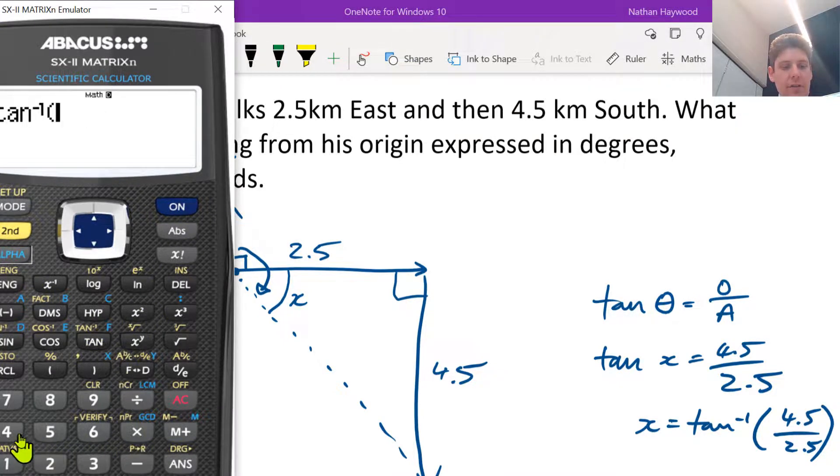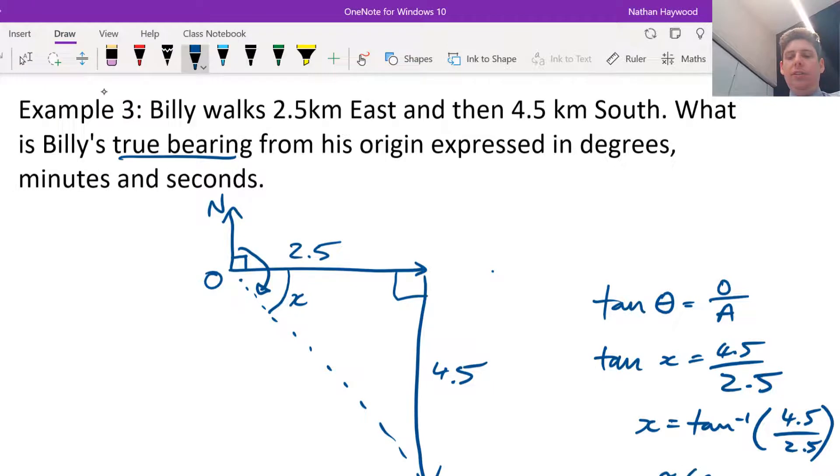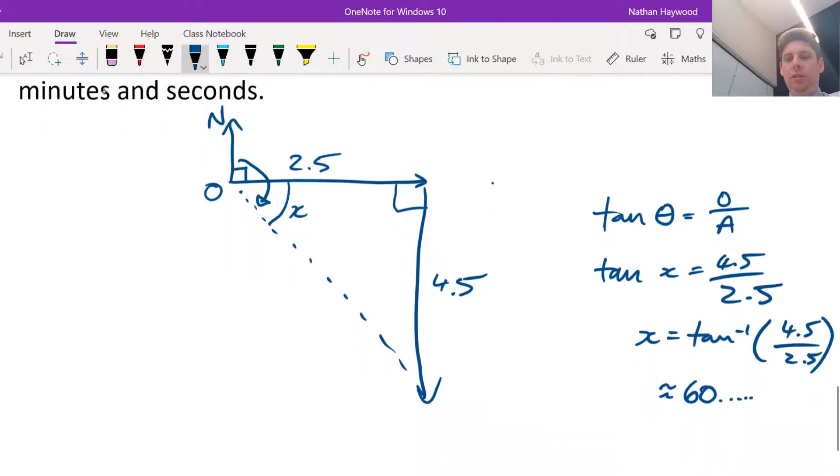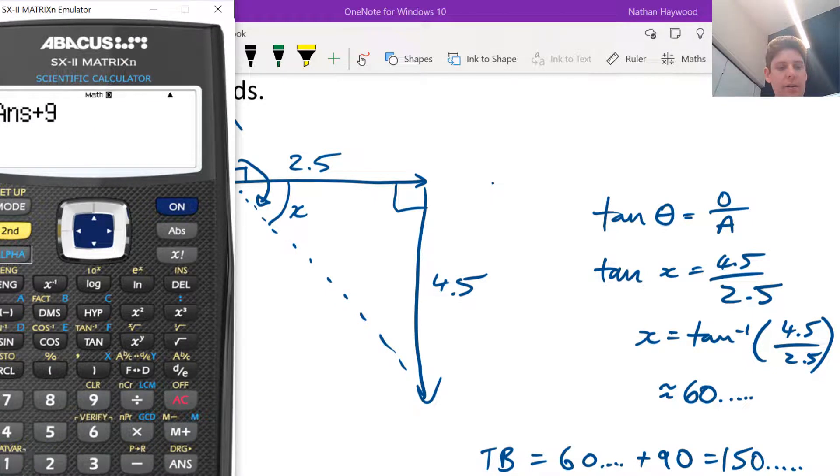Tan to the negative 1 of 4.5 divided by 2.5 equals, and you got that, so 60 point etc. So then the true bearing is 60 point etc plus 90, which is 150 point etc. So add 90 to that answer.